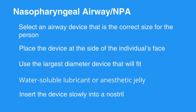Lubricate the airway with a water-soluble lubricant or anesthetic jelly. Insert the device slowly into a nostril, moving straight into the face, not toward the brain. It should feel snug — do not force the device into the nostril. If it feels stuck, remove it and try the other nostril.